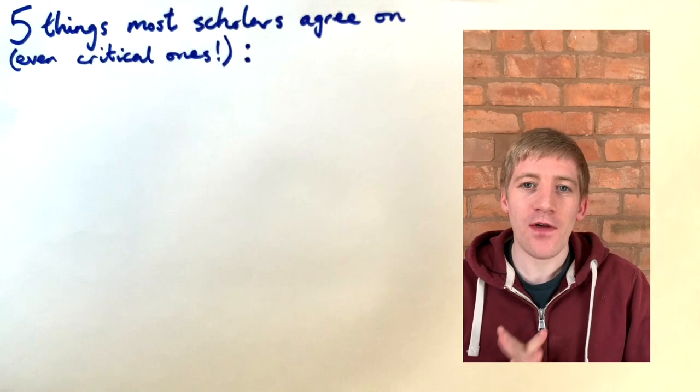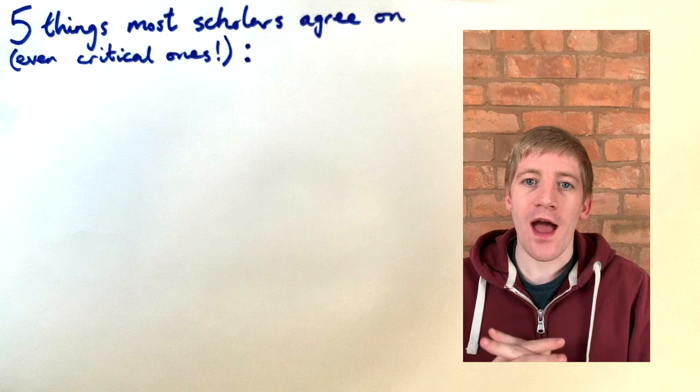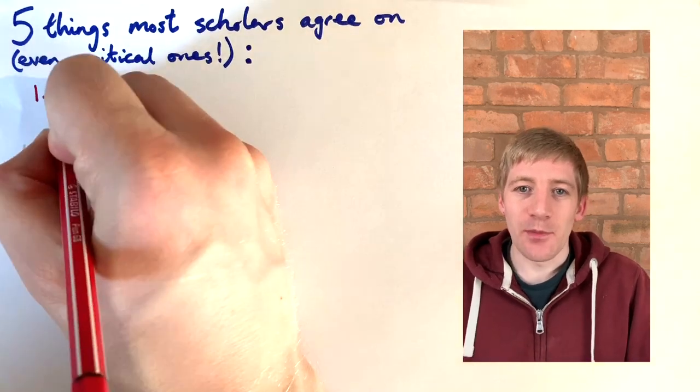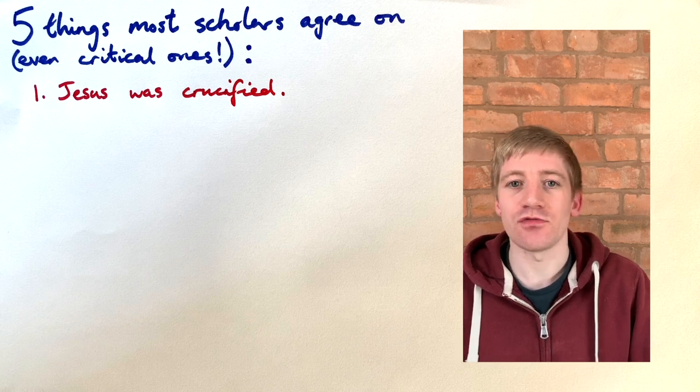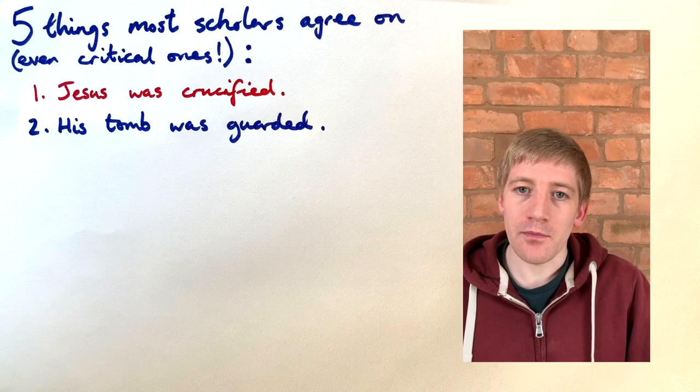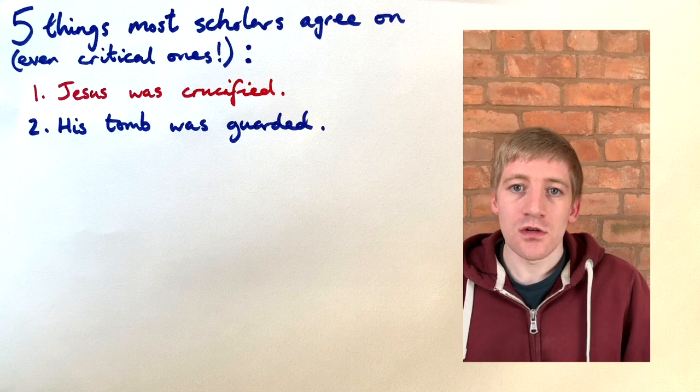To start us off then, we're going to look at five pieces of information that generally everybody agrees on. Number one, Jesus of Nazareth was a real person and he was crucified by the Romans in Jerusalem. Two, his tomb was being guarded by a detachment of at least four soldiers, probably Roman.